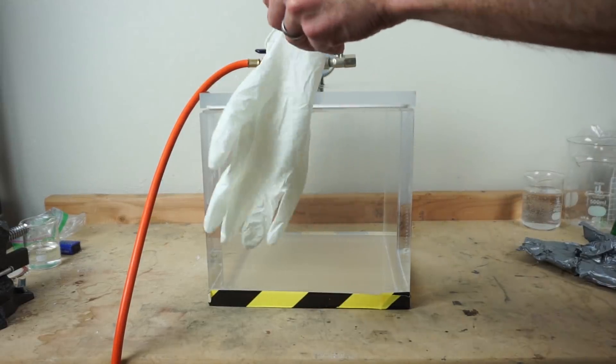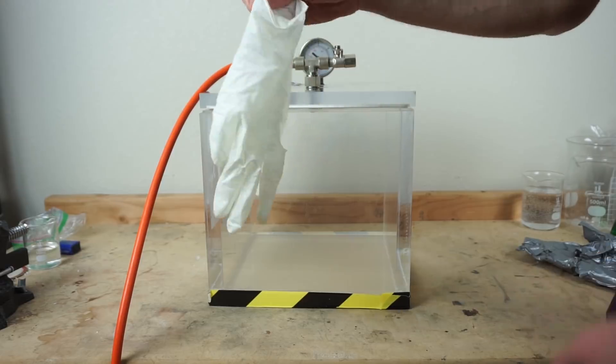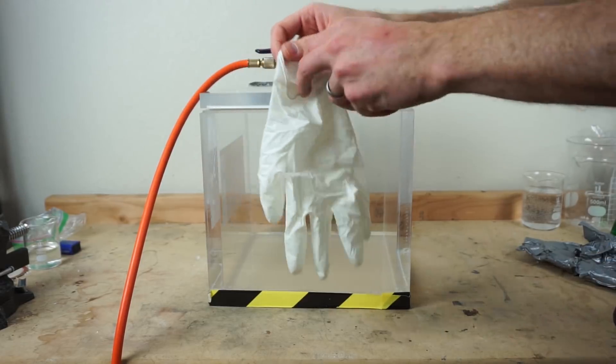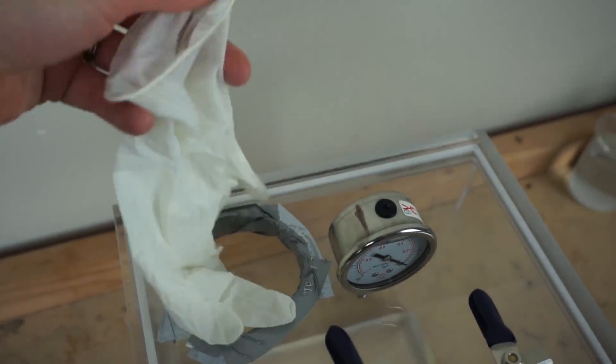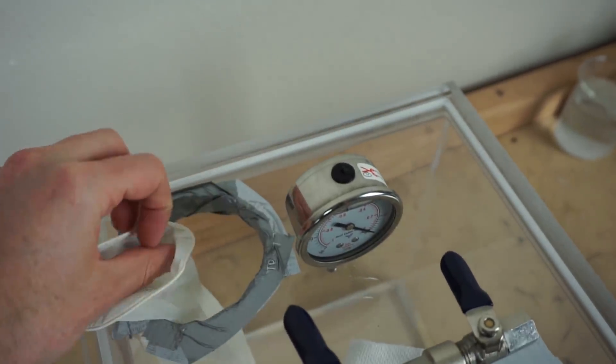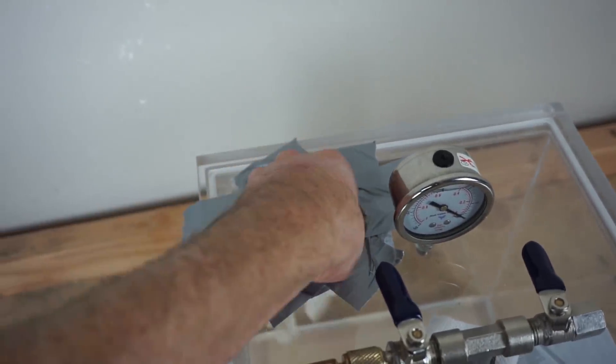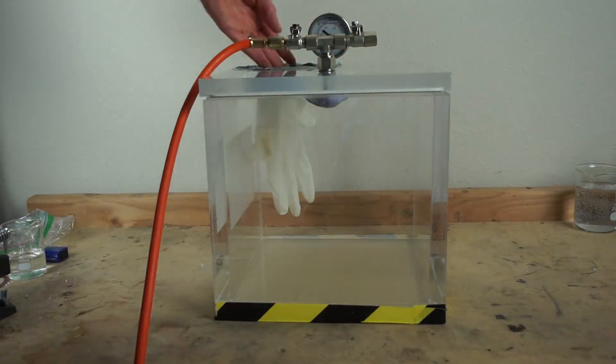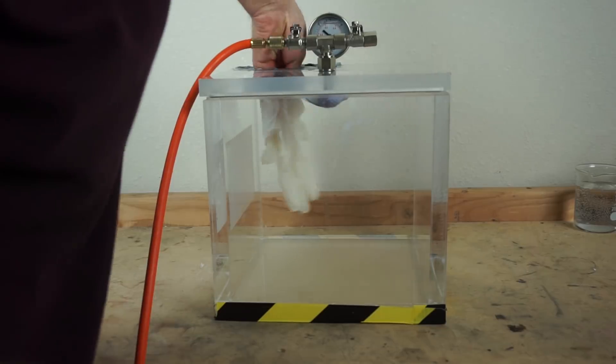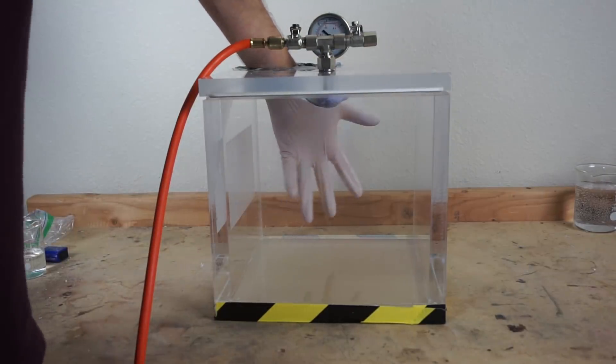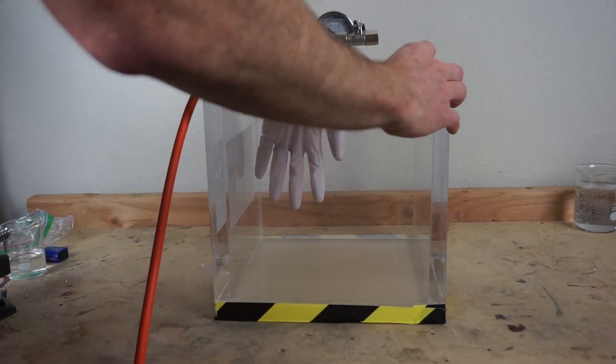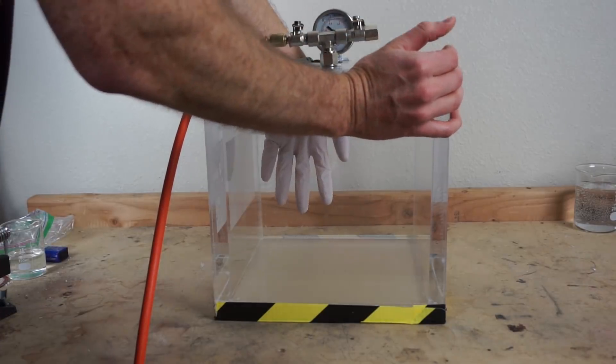So first let's see what happens if you were to use a regular latex glove as your glove in your spacesuit. So what I'm doing here is I just have the glove in here like this. Then I'm just taping it on here to get a good seal and then I can stick my hand in here. So here's a normal latex glove.